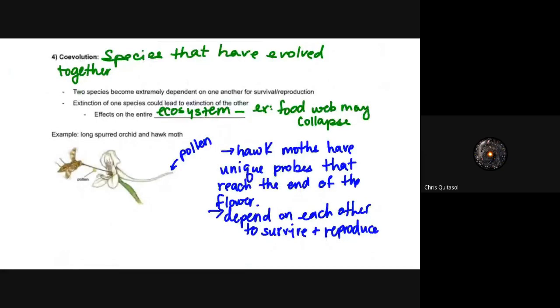And then the last thing I want to talk about with regards to these types of evolutions is coevolution, and it's species that have evolved together. So this is a very important fact in terms of being extremely dependent on one another. When you think about any type of symbiotic relationship, it's very similar to this convergent or coevolution. So thinking of the idea of the extinction of one species would lead to the extinction of the other, it's because they're so inextricably linked to each other that if one goes the other will as well, and this has effects on the entire ecosystem and the food web may in fact collapse if one goes extinct whereas the other does not.